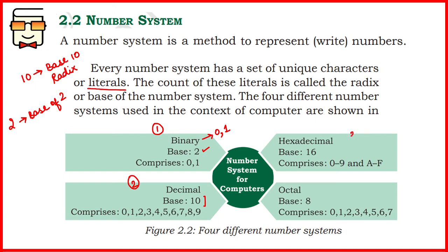The third is the hexadecimal number system. As the prefix 'hex' refers to 16, it has 16 literals. These 16 literals are the digits 0 to 9 and the alphabets capital A to capital F. Capital A represents 10, capital F represents 15, and B, C, D, E represent 11 to 14 respectively.